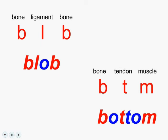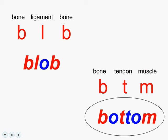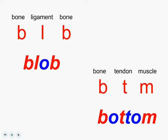So again, how are you going to remember the difference between ligaments and tendons? If you've got bone connected to bone, it must be a ligament — it can spell B-L-B or 'blob.' And if you've got bone connecting to muscle, then it must be a tendon, so it spells out 'bottom.' Blob and bottom.